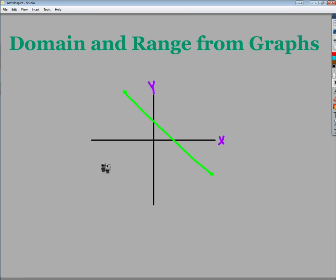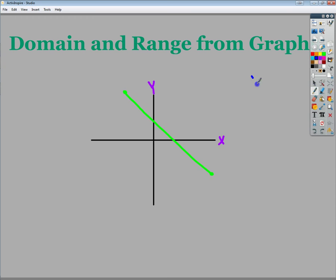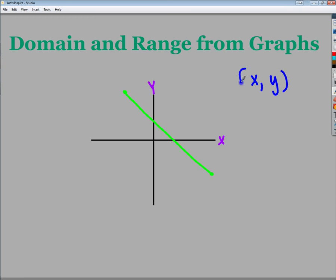Now, when I talk about domain and range specifically from graphs, I'm talking about basically the x and y terms. This is my coordinate in most cases. You have the x first. I tend to think of the abbreviation for doctor. So this would indicate that my domain values are my x's and my range values are my y values.